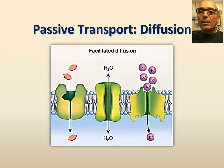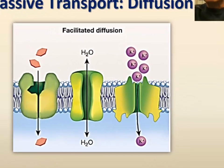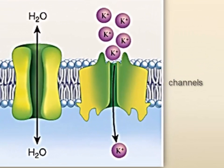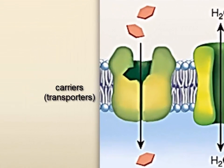However, for most biologically important solutes to diffuse, they require membrane proteins to facilitate their diffusion. Facilitated diffusion proteins can be grouped into two large categories: the channel proteins, for ions and water, and the carrier or transport proteins, for solutes such as glucose and amino acids.